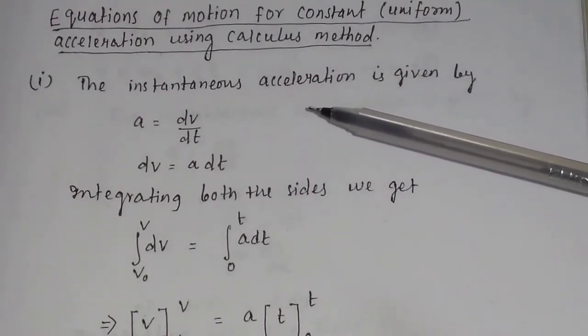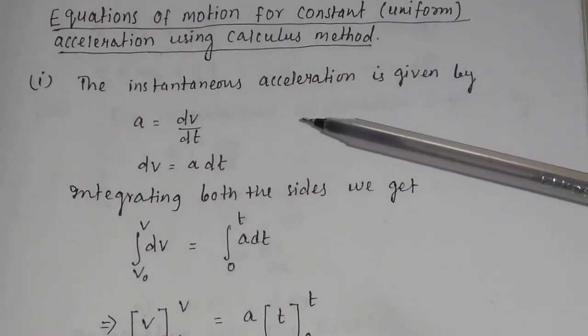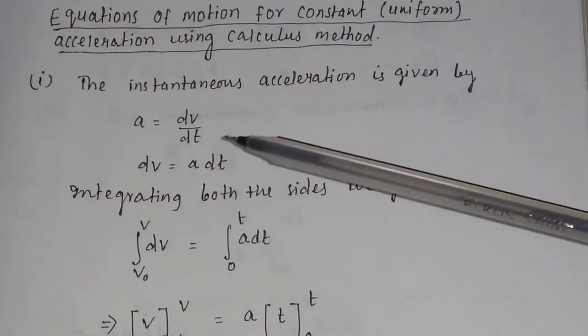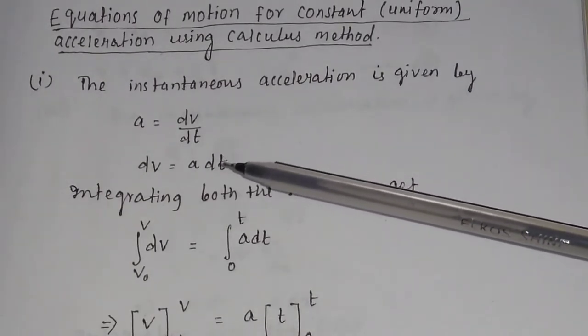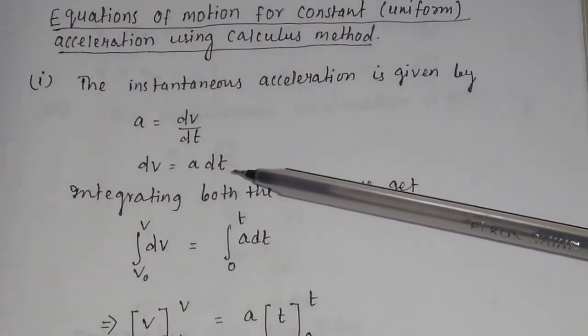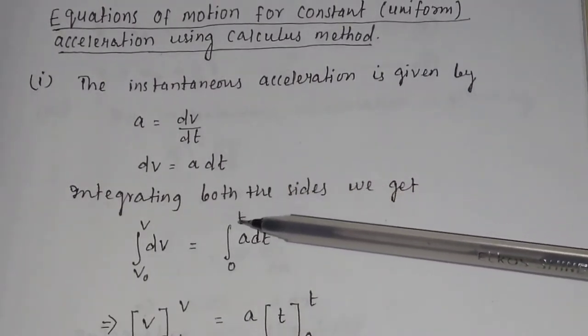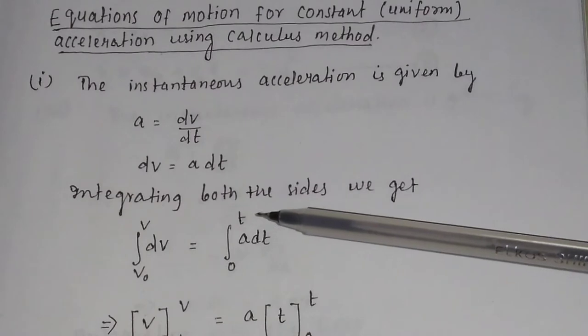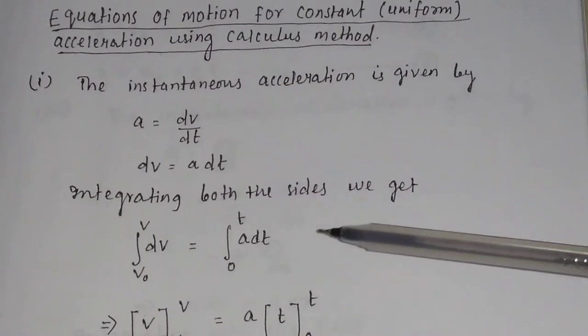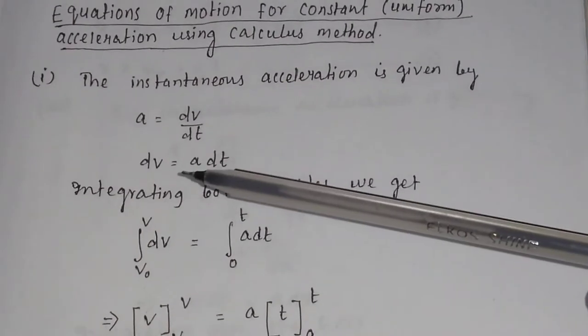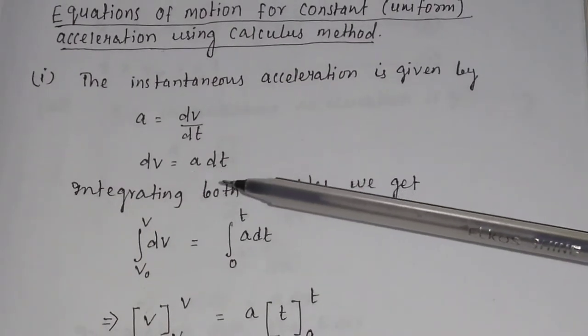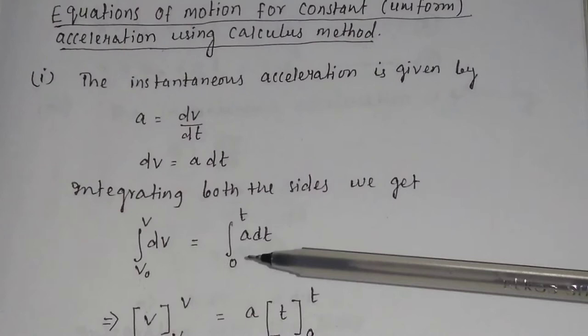The instantaneous acceleration is given by A equal to dV by dt. So, dV equal to A into dt. Integrating both sides, we get: integration of dV will be equal to integration of A dt.